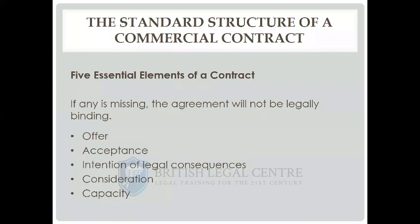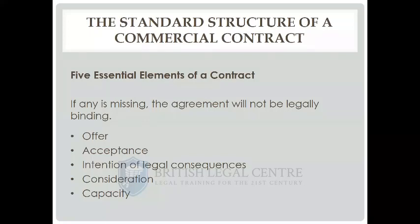Consideration doesn't have to be equal to the value of the thing you get in return. We all possibly go into antique stores looking for a bargain - if the shopkeeper accepts our offer, it's a binding contract. And lastly, you must have the capacity to enter into a contract: the legal capacity in terms of a corporation being properly formed, and in human beings the legal and physical capacity. A child can't enter into a contract, a mental patient can't, a serving prisoner can't, a bankrupt can't while they are bankrupt. You also can't make a contract with a citizen of a state with which your country is at war.